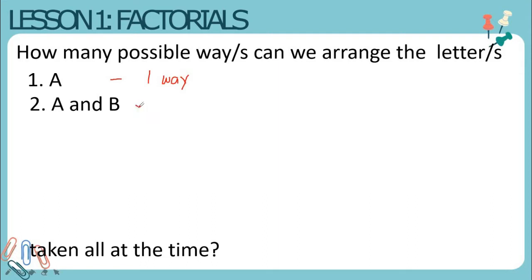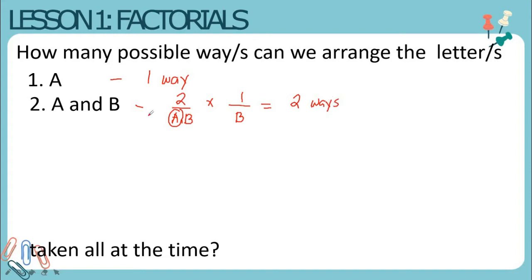Number two: letters A and B. Since we have two letters to be selected, applying the fundamental counting principle, we will draw two lines. On the first line we can select letter A or B, so we have two options. If we have chosen letter A, then on the second line we only have letter B, so we have one option. Two times one is equal to two, so there are two possible ways to arrange letters A and B taken all at a time.